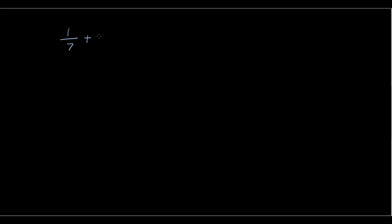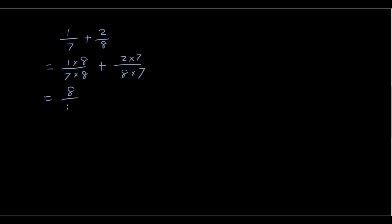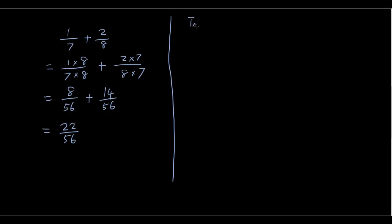Let's do another example: one out of seven plus two out of eight. What do you do now? Well, let's make the denominators the same. Take the first fraction and multiply both the numerator and the denominator by the denominator of the second fraction — so multiply by 8. For the second fraction, multiply both the numerator and the denominator by the denominator of the first fraction, which is 7. Now we get eight over fifty-six plus fourteen over fifty-six, which equals twenty-two over fifty-six.